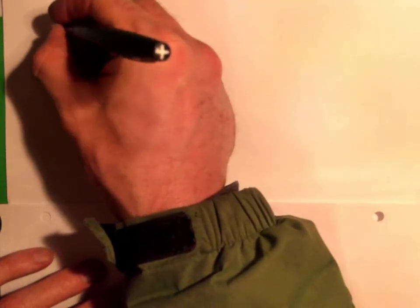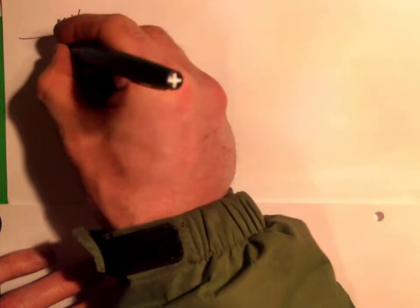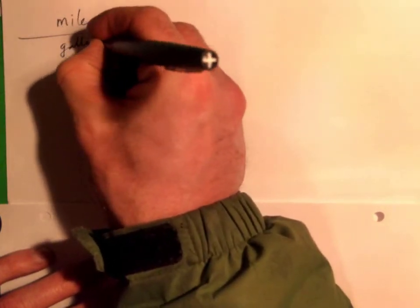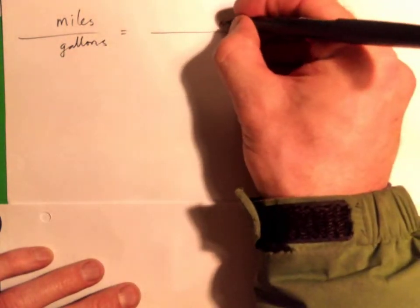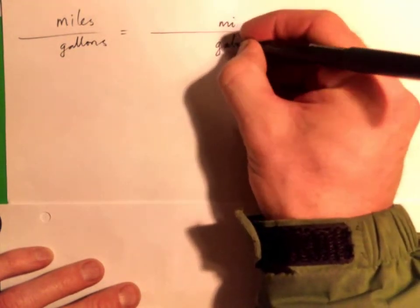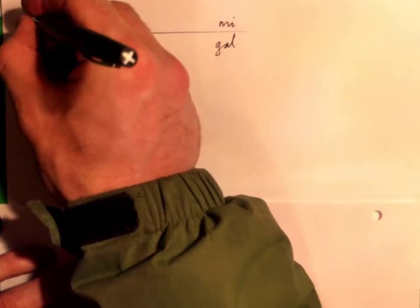All right, so we can go miles over gallons equals miles over gallons. M-I-G-A-L, same thing - mi is short for miles. So 350 miles for one tank of gas which is 18 gallons, right?